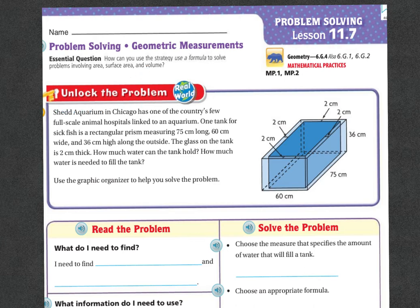Let's unlock the problem. Shedd Aquarium in Chicago has one of the country's few full-scale animal hospitals linked to an aquarium. One tank for sick fish is a rectangular prism measuring 75 centimeters long, 60 centimeters wide, 36 centimeters high along the outside. The glass on the tank is two centimeters thick. How much water can the tank hold? How much water is needed to fill the tank? Use the graphic organizer to help you solve the problem.